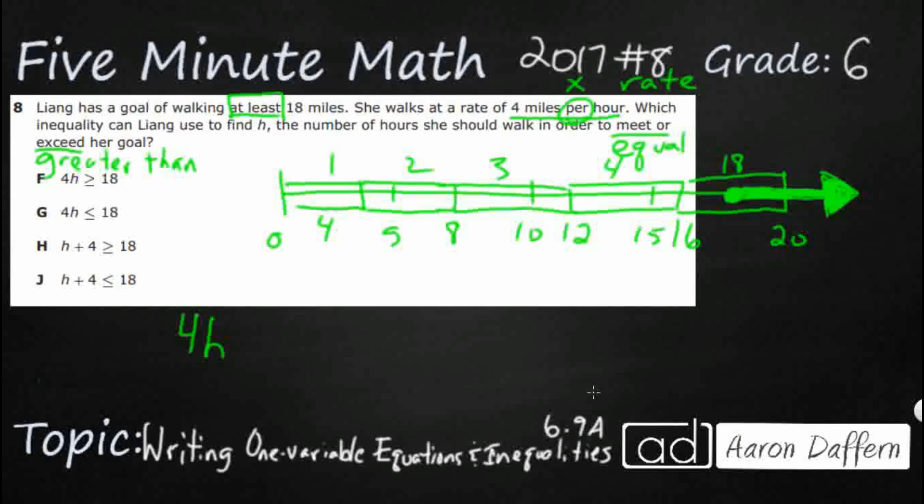So we are going to eliminate H and J because they're adding. That's not an additive relationship. That's a multiplicative relationship. Now we come back to look at our two options. Greater than or equal to, less than or equal to. Well, remember she wants to meet or exceed. So she wants to be greater than, meet or exceed this 18 miles. That's going to actually give us F.